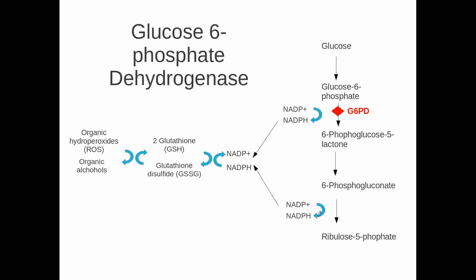Glucose-6-phosphate dehydrogenase is an enzyme which works in this metabolic pathway going from glucose to ribulose 5-phosphate. It converts glucose-6-phosphate into 6-phosphoglucono-delta-lactone. As an important byproduct, it produces NADPH. NADPH, in turn, promotes the regeneration of glutathione disulfide, which will convert organic hydroperoxides — reactive oxygen species — into organic alcohols.